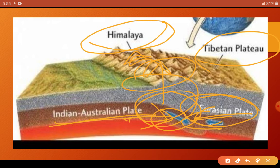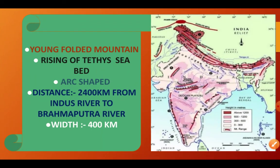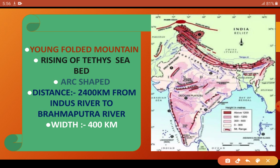Now we have understood Himalaya's formation. In red color you can see the Himalaya. This is a Young Folded Mountain. It is called arc-shaped — like an arch.